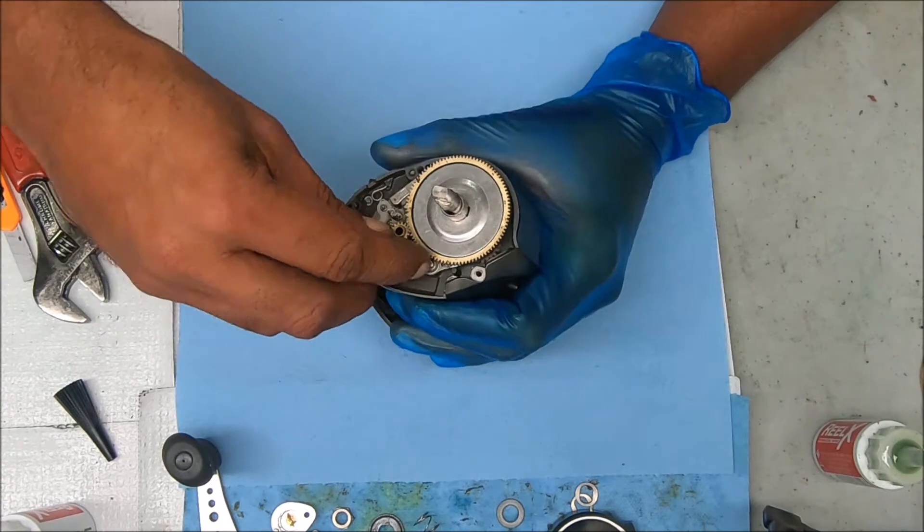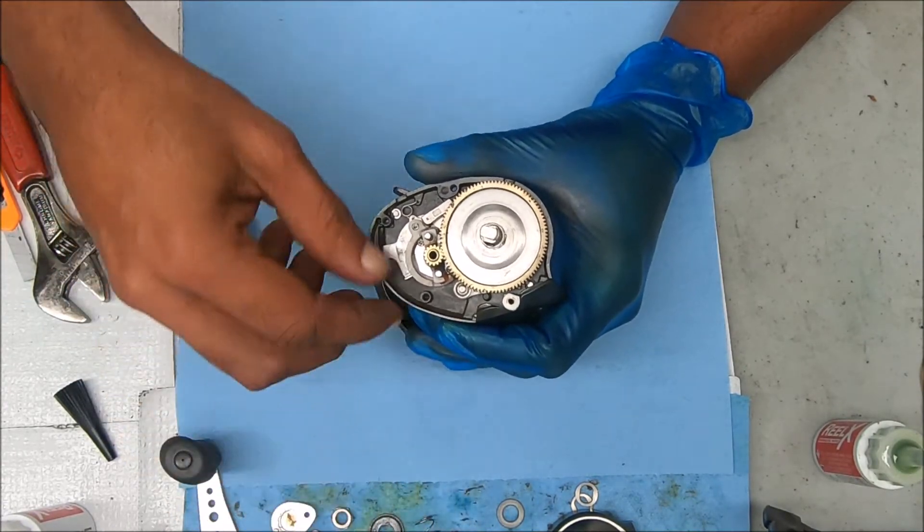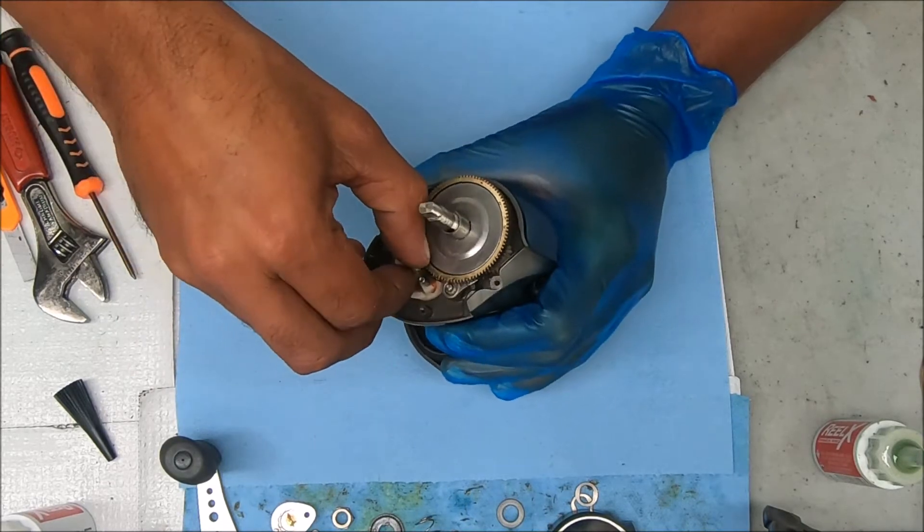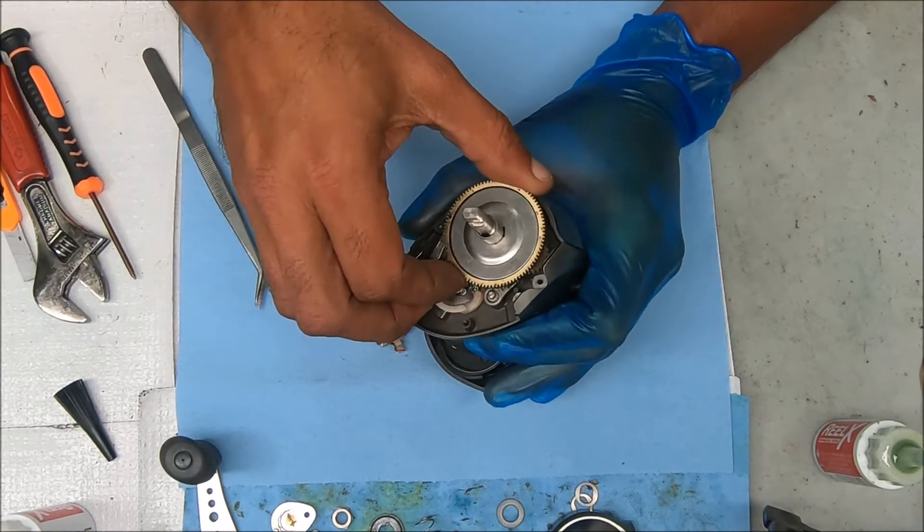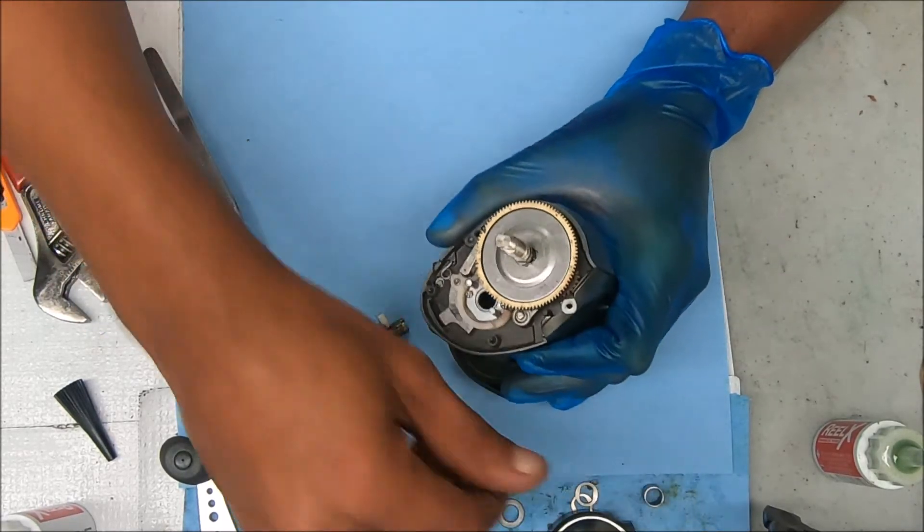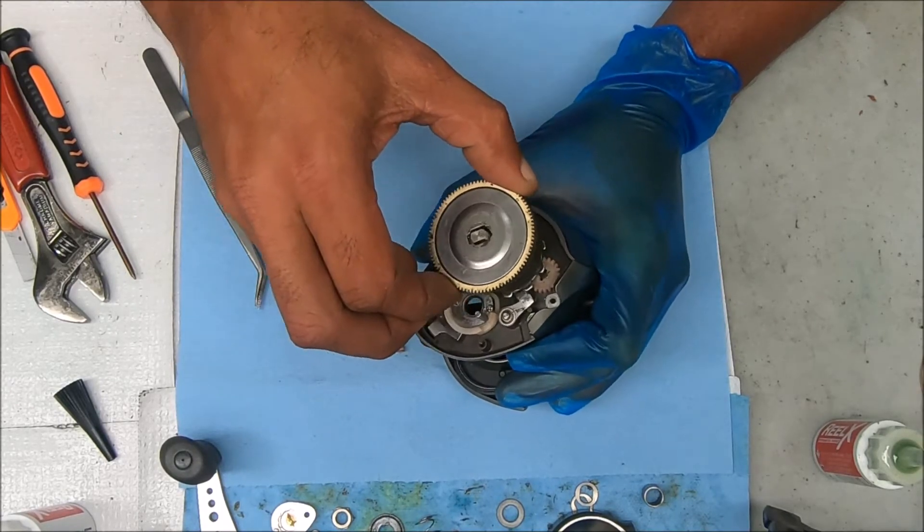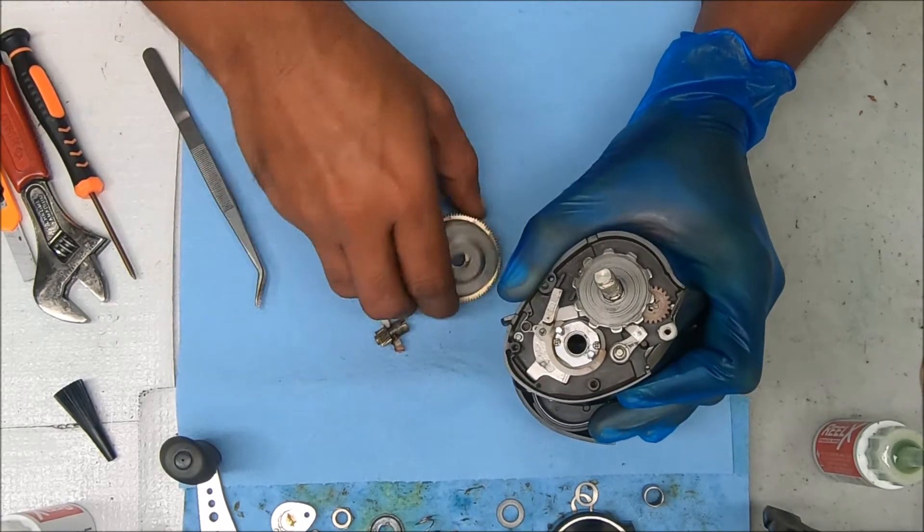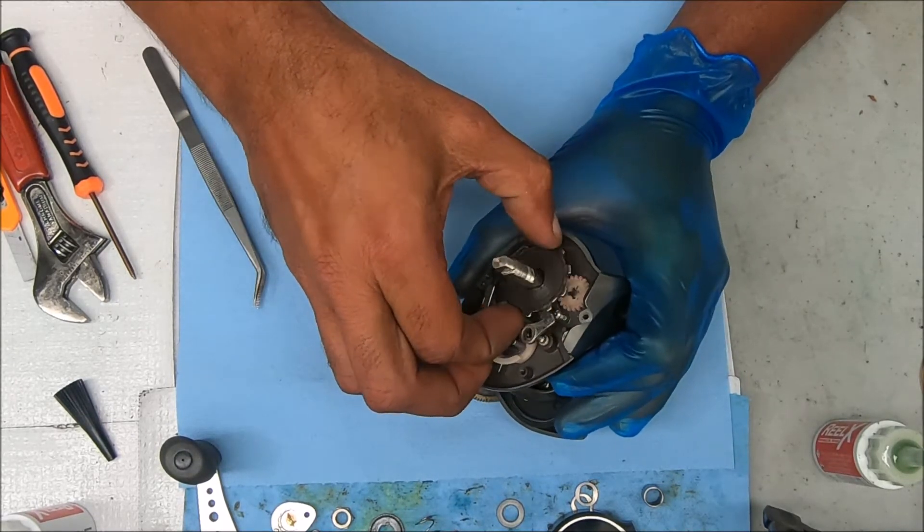So the next step we're going to do is take these springs off. Now we're just going to pull this pinion gear up and now we'll go for the main gear. Let's take the sleeve off of there. And these kind of stick so you've got to kind of rock them.